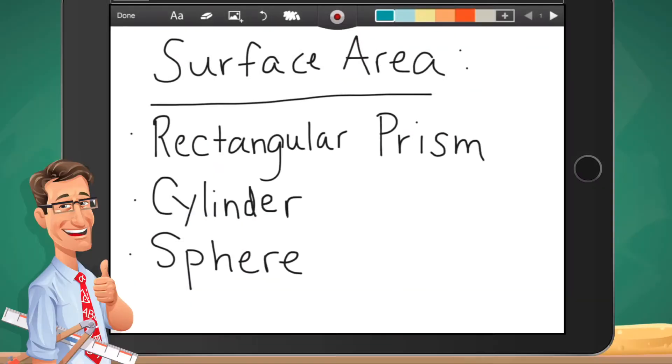Today I want to talk about finding the surface area of a rectangular prism, a cylinder, and a sphere. What you're finding here is basically how much you would have to color if you were to color the outside of your shapes.